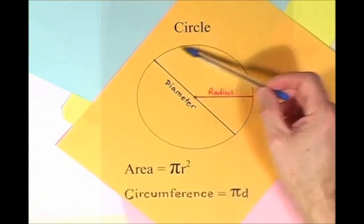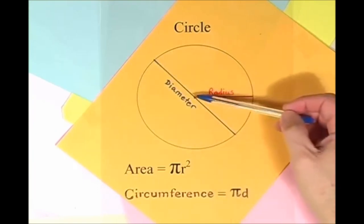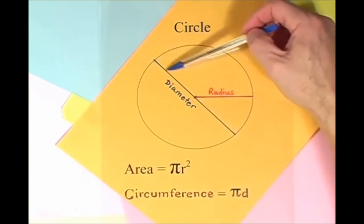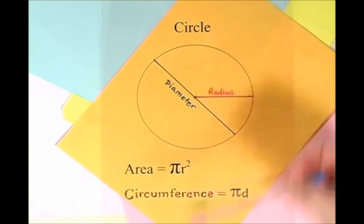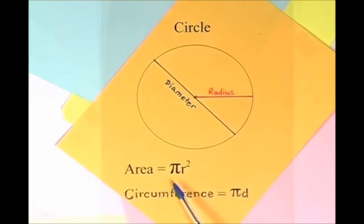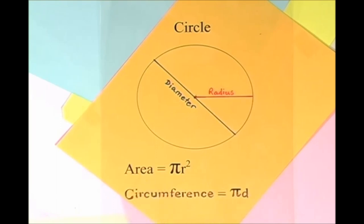Here is a circle, it knows how to get around. It has a radius from center to rim. And its diameter's a line that goes from side to side while passing through the center, now isn't that simple. Pi r squared sounds like area to me, when I need a circumference, I'll just use pi d.